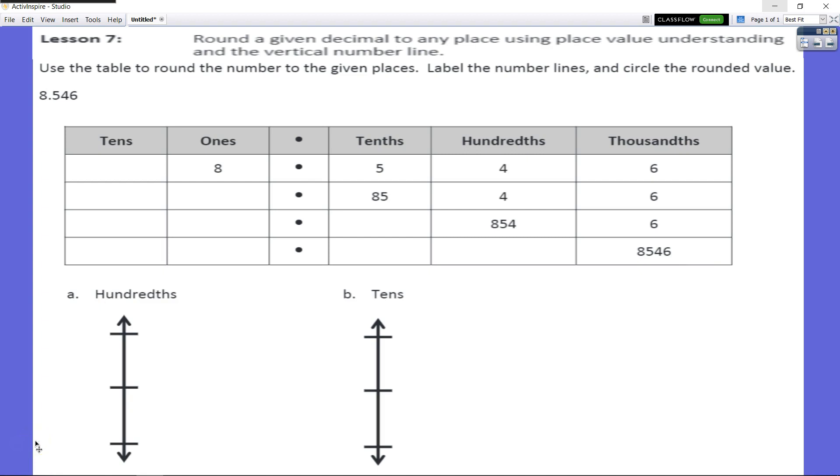All right, so lesson seven, we're going to be rounding decimals to any place value using our place value understanding and also something new here, which is our vertical number line. So the directions ask us to use the table to round numbers to a given place, and we're going to label the numbers on the number line and circle the number that we rounded to.